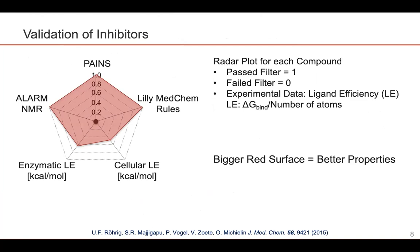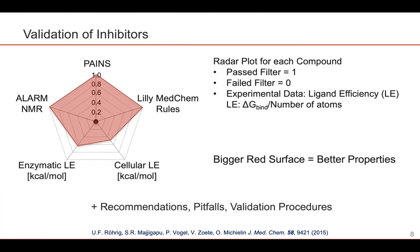In order to do so, we developed a radar plot for each compound, where we assigned a value of 1 for each passed filter on the upper three corners of the pentagon, and a value of 0 for each failed filter. On the lower half, we have two kinds of experimental data points using ligand efficiency in the enzymatic assay and the cellular assays. For each compound, we could develop such a pentagon, and the bigger the red surface of a compound, the better its properties. We also added recommendations, pitfalls to avoid, and validation procedures to a perspective that we published in 2015.